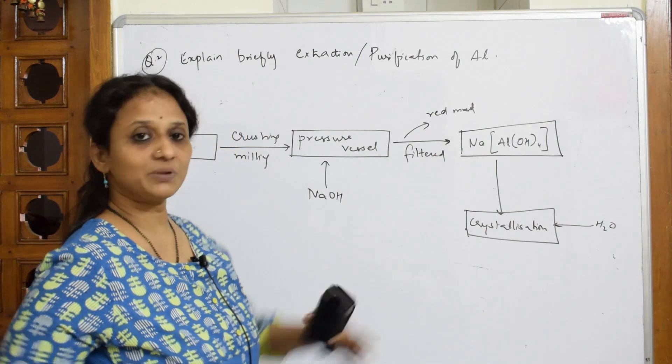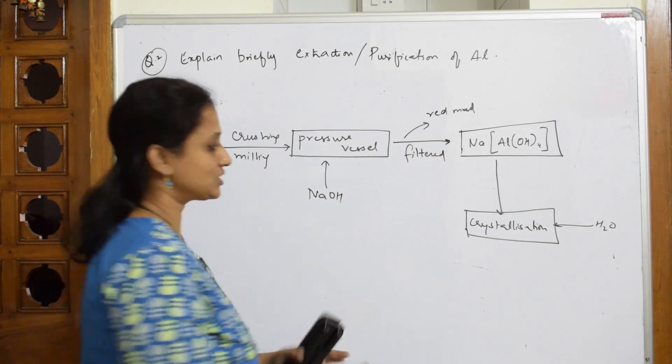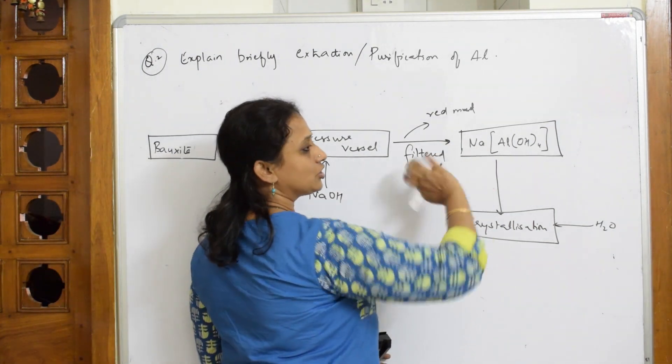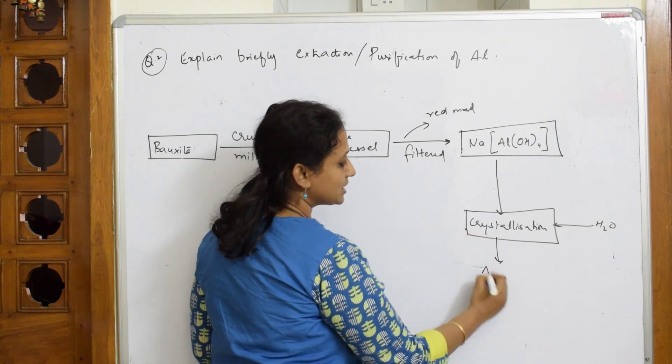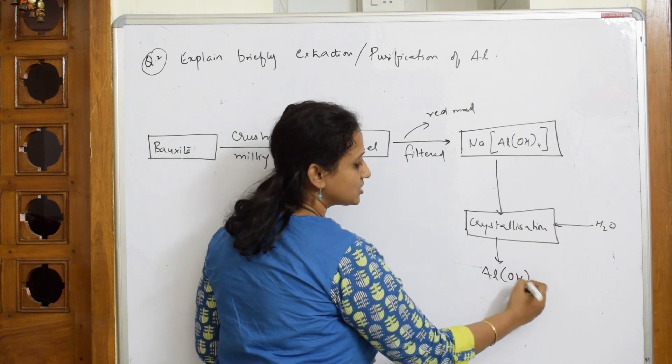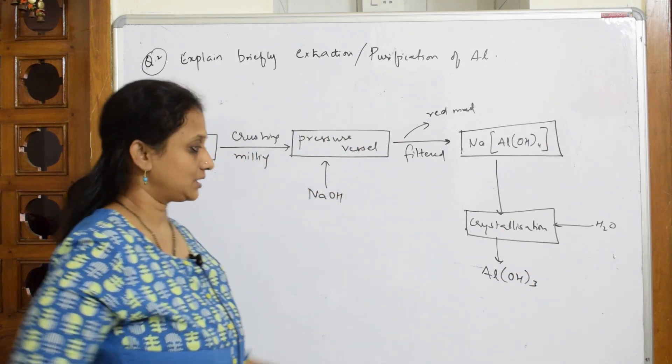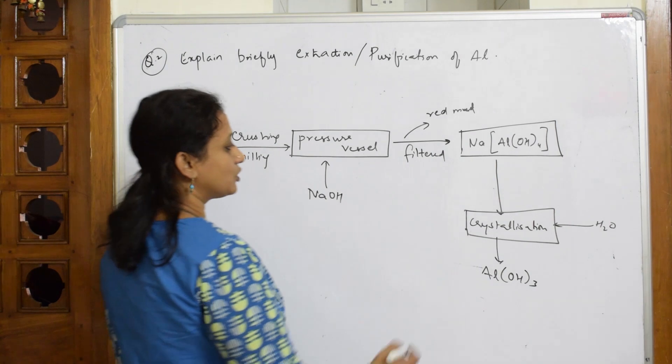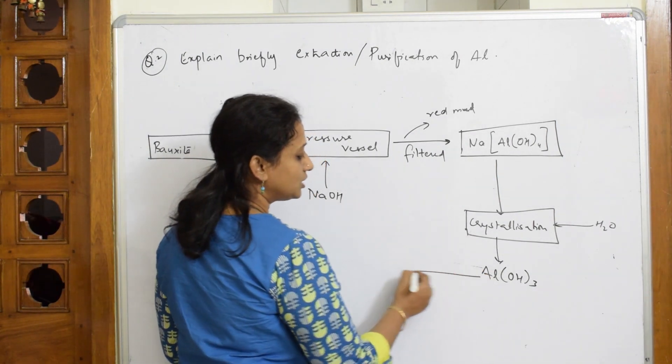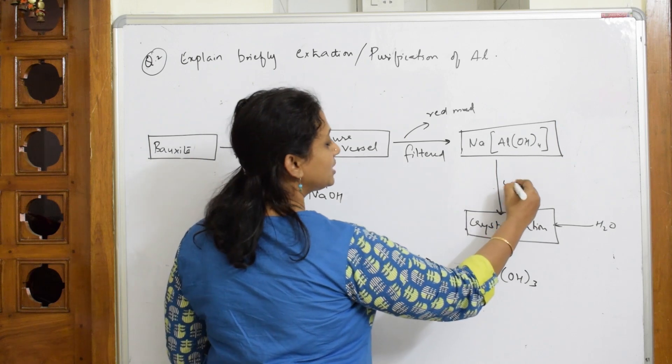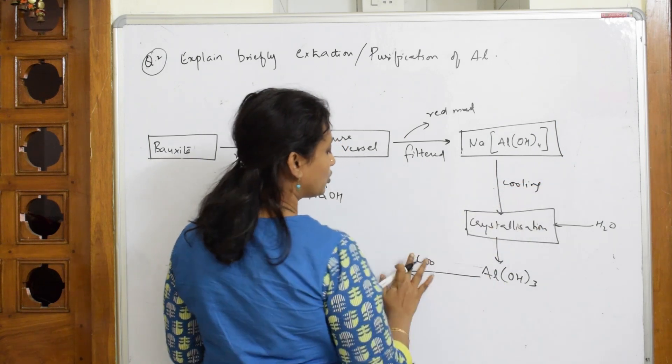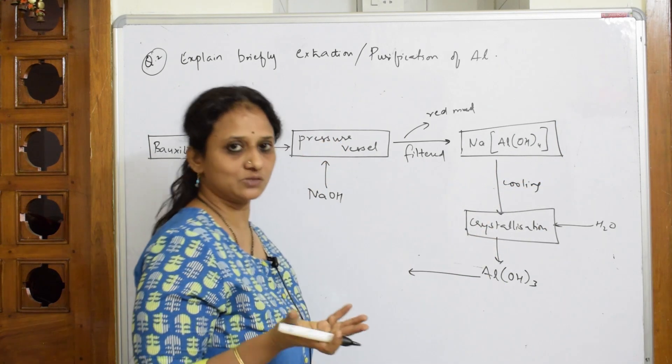So that complex breaks up or it divides into two particles because your Na is out and your aluminium hydroxide forms a separate complex. So during crystallization, Al(OH)3 forms. So this aluminium hydroxide, what do we do? We are going to further cool this. When you cool it, what happens? It will get crystals.